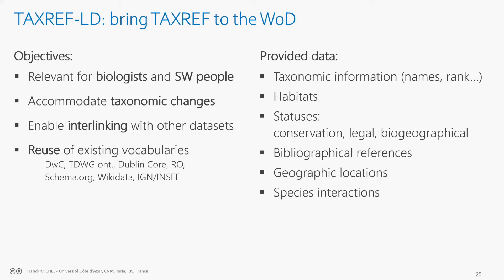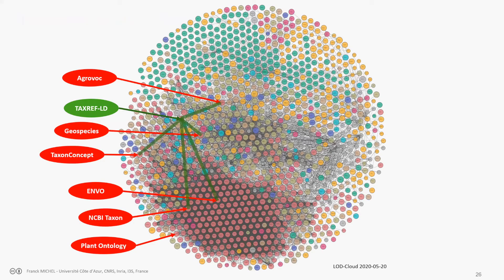The dataset is now published, containing basic taxonomic information, habitats, different types of statuses, bibliographical references, geographic locations, species interactions, and we are working on an extension for life traits. TaxRef-LD — the linked data version of TaxRef — is now published on the web of data with its own node in the LOD cloud diagram. It is linked with other taxonomic registers, so whenever you link to TaxRef you have a direct path to NCBI Taxon, and then to other applications based on NCBI Taxon, connecting different applications developed on different registers.